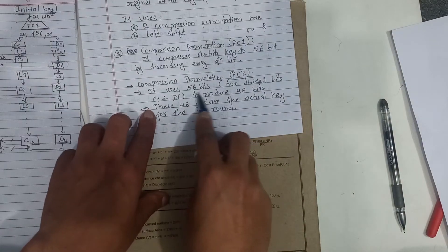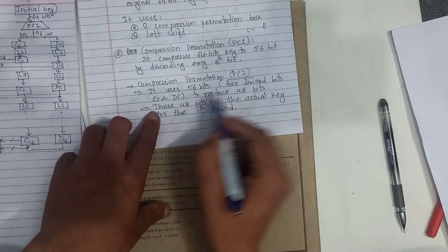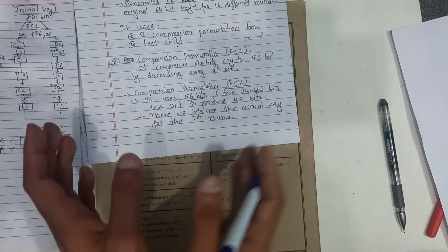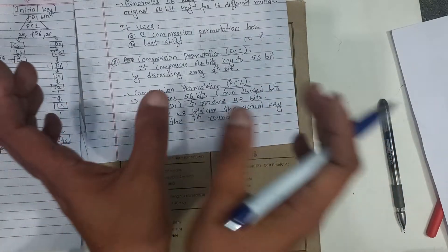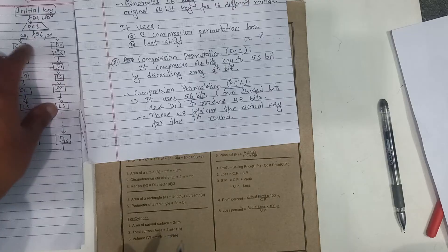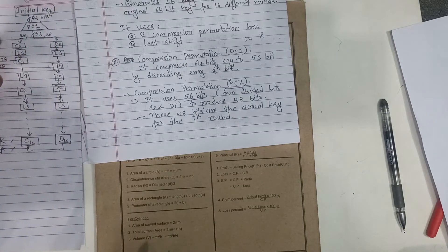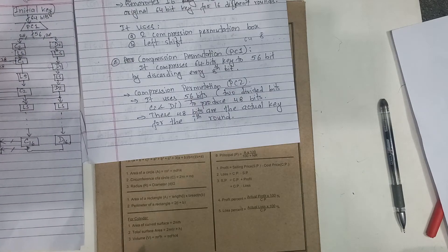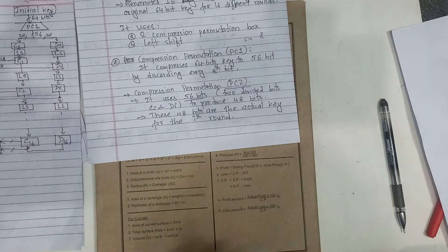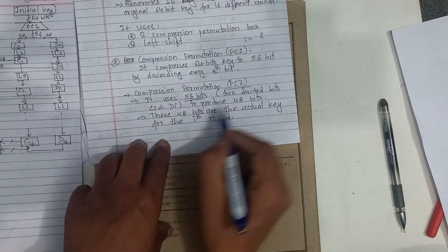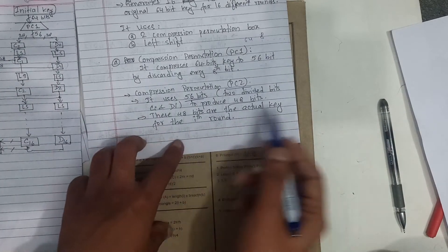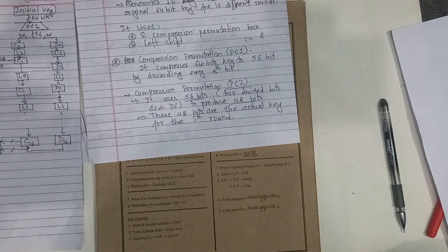PC2 takes the 56 bits, which are divided into two halves of 28 bits each. After applying left shifts to each half, PC2 compresses the 56 bits down to 48 bits. These 48 bits are the actual key for the ith round.